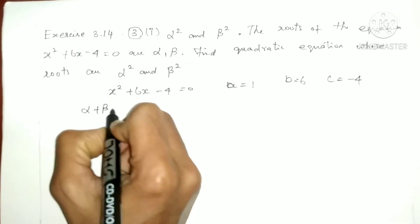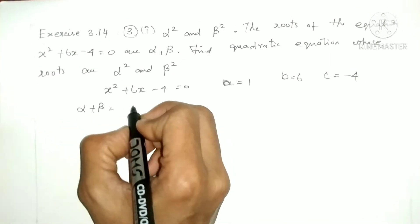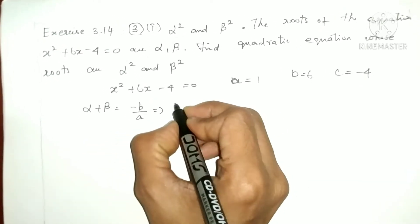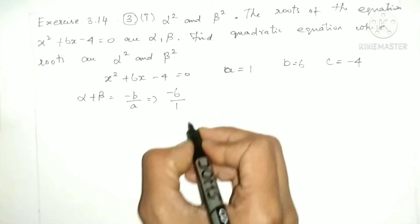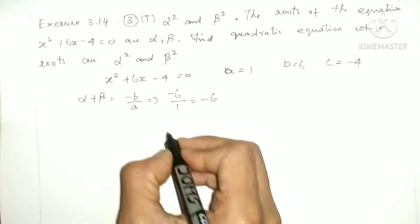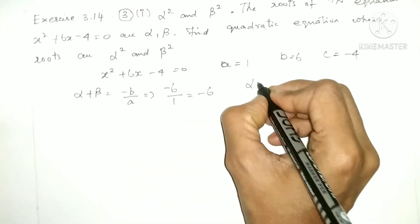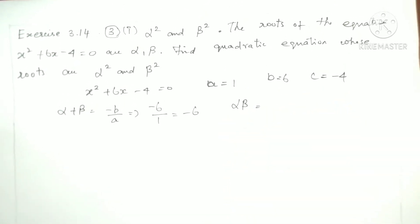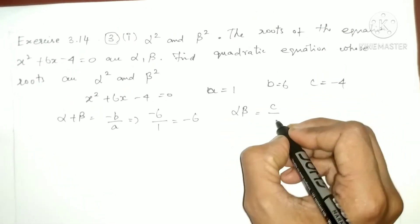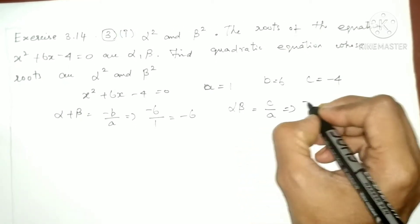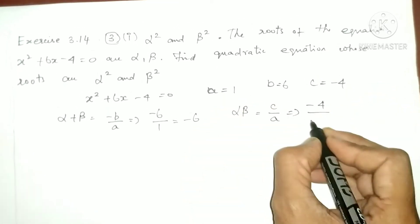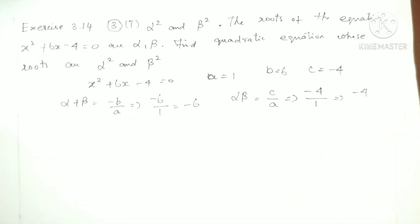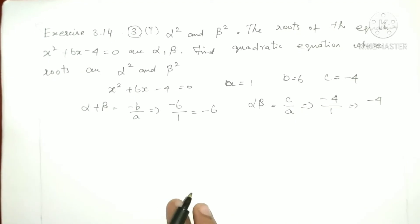Now we find sum of the roots and product of the roots. Alpha plus beta — so alpha plus beta, using the formula minus b by a, which means minus 6 by 1, this means minus 6. Then product of the roots, alpha into beta, using the formula c by a, which means minus 4 by 1, so minus 4. Sum and product are found.